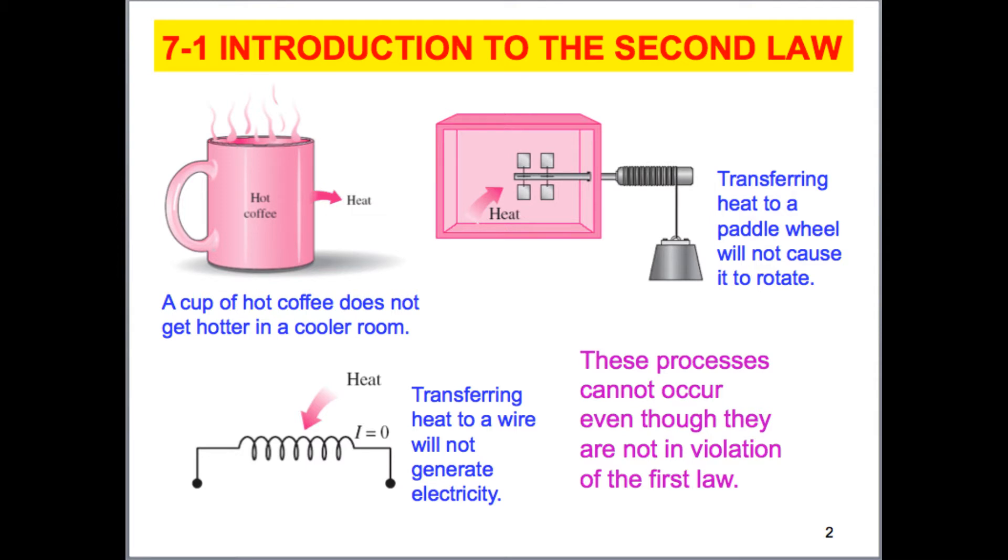Now, the second law, like we mentioned in one of the first lectures, describes that there's a certain quality to energy also. There's not just a quantity. The first law states that there's a quantity. We can't violate the quantity. A certain amount of energy has to be transferred from either heat or work or internal energy or kinetic or potential energy. These all have to be balanced.